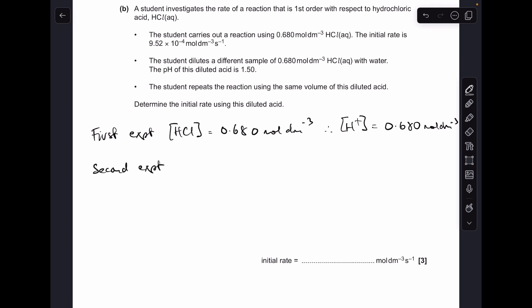So for the second experiment, we're going to use the pH of the diluted acid to get the new H-plus concentration. So H-plus concentration equals 10 to the minus pH, so 10 to the minus 1.5. So the new H-plus concentration is down to 0.0316 moles per decimeter cube.